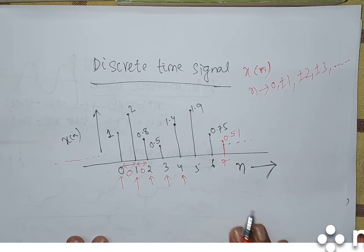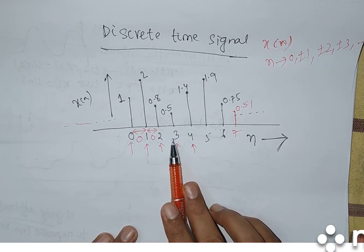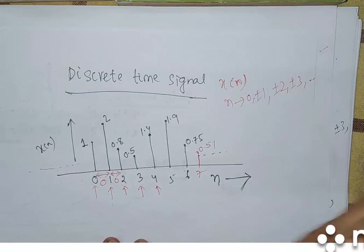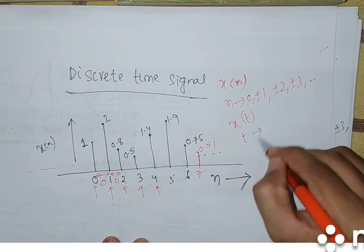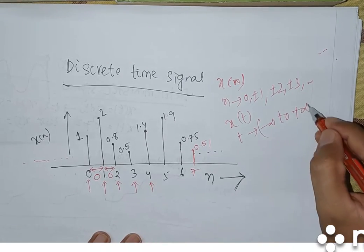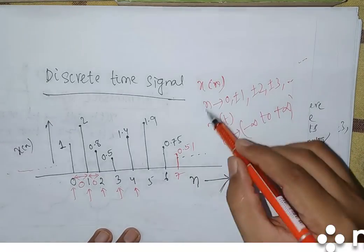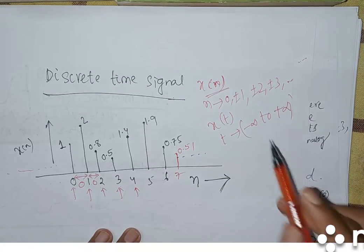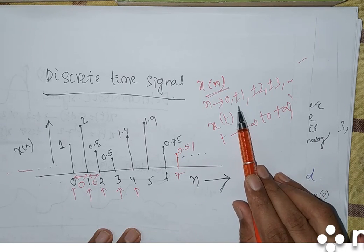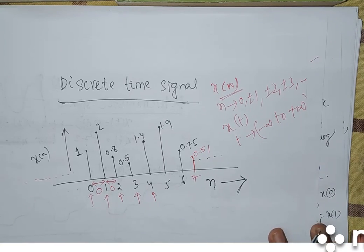This is a discrete time signal. The value of x(n) does not exist for all values of n, like t. In case of continuous time signal, t is from minus infinity to plus infinity — you can take any value of t. But in case of discrete time signal x(n), you cannot take all values of n. It is bounded: you can only take discrete values, or integers 0, ±1, ±2, ±3, like this.